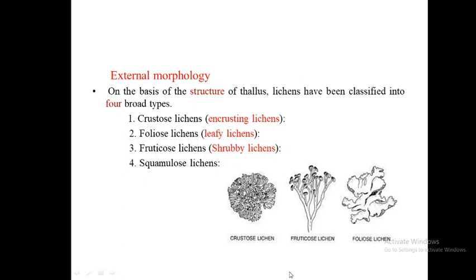The common blue-green algae partners (cyanobacteria) are Nostoc, Rivularia, Scytonema, Calothrix and Gloeocapsa. About 80% of lichen thalli contain green algae. The common green algae are Trebouxia, Coccomyxa, Myrmecia and Trentepohlia. Some examples of lichens are Parmelia, Cladonia, Ramalina and Usnea. These are the general characteristics of lichens.